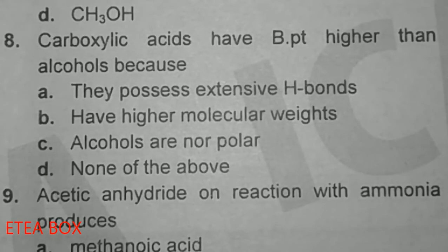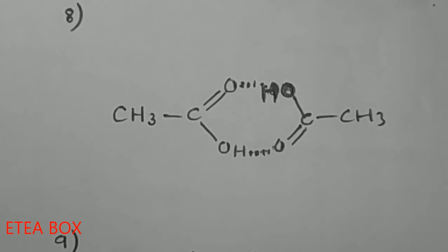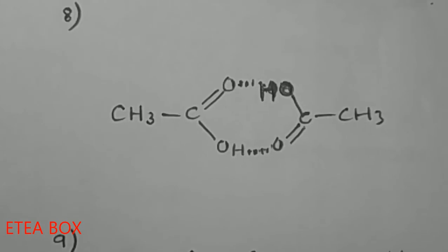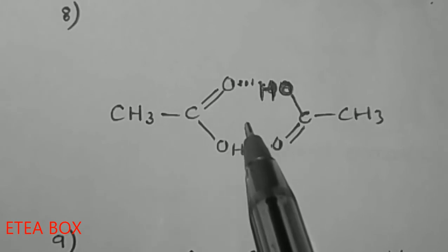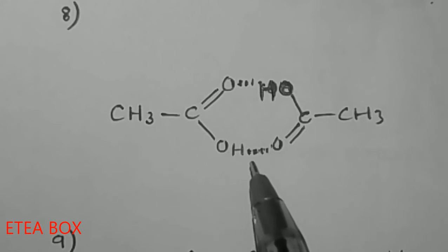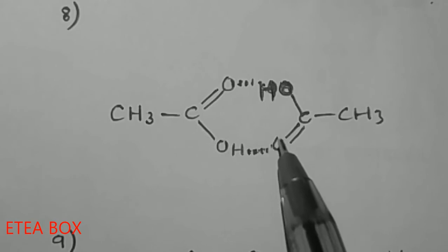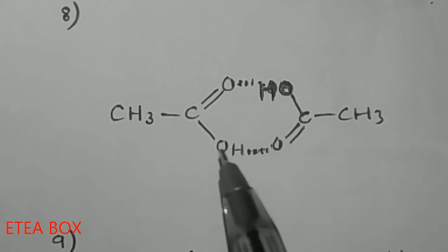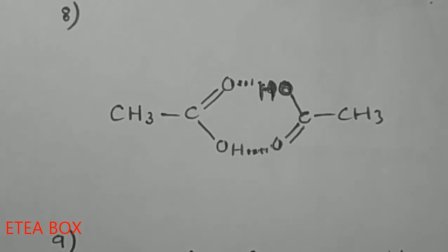Carboxylic acids have a higher boiling point than alcohols because they possess extensive hydrogen bonding — option A is correct. Carboxylic acid forms a dimer with two hydrogen bonds, which are very strong. Alcohol contains only one hydrogen bond, while two acetic acid molecules together contain two hydrogen bonds. That is why the boiling point of carboxylic acid is high compared to alcohol.